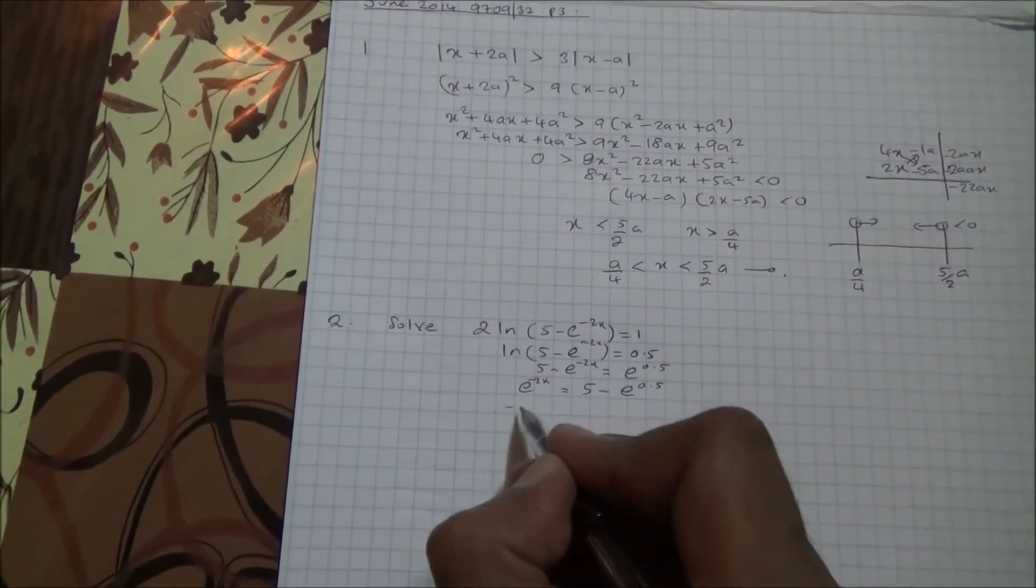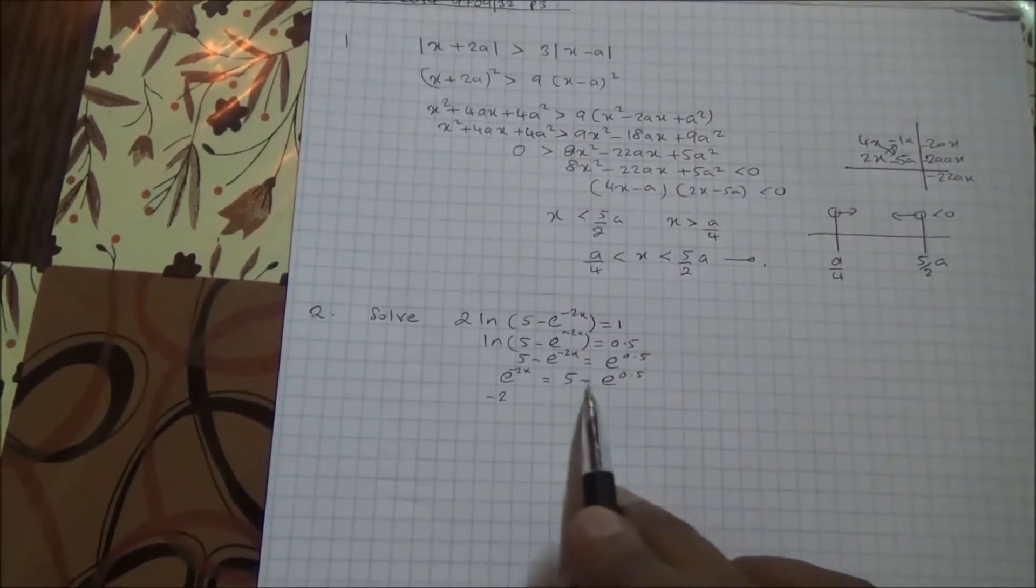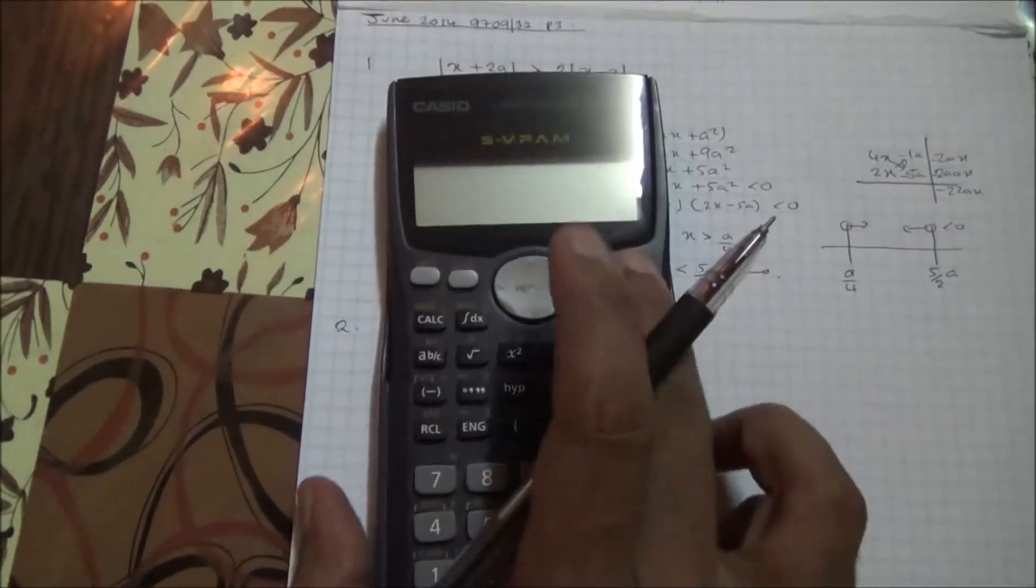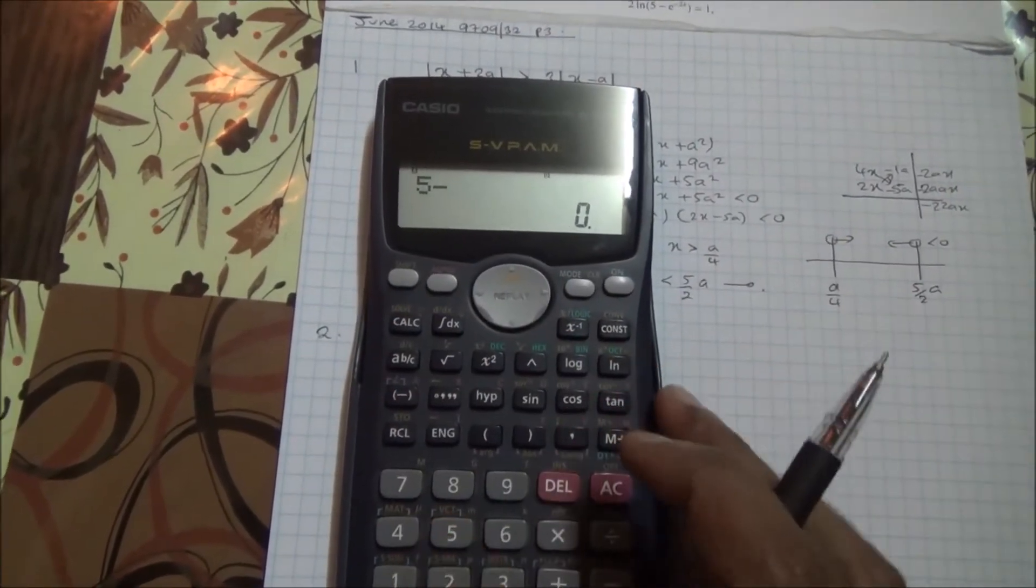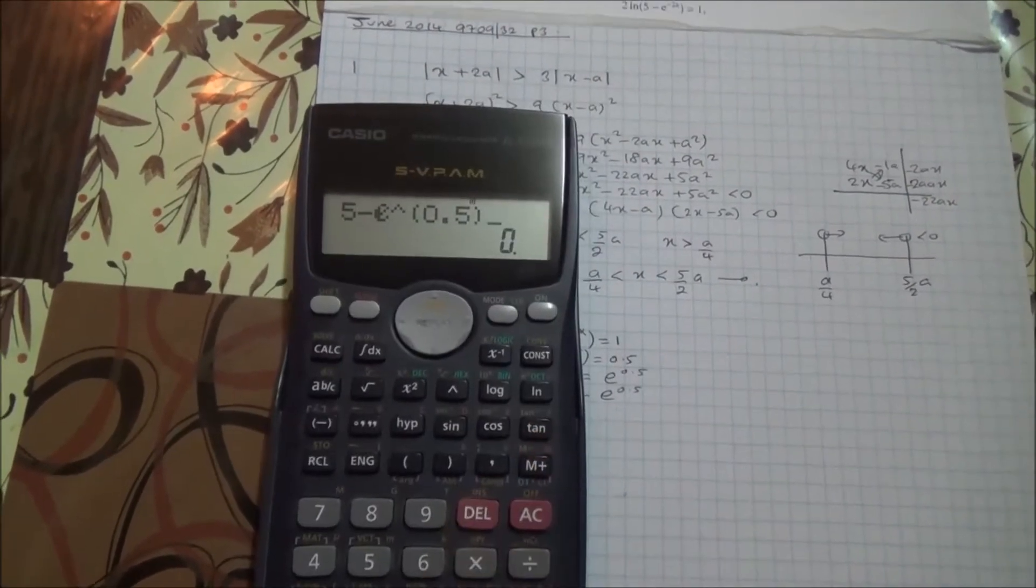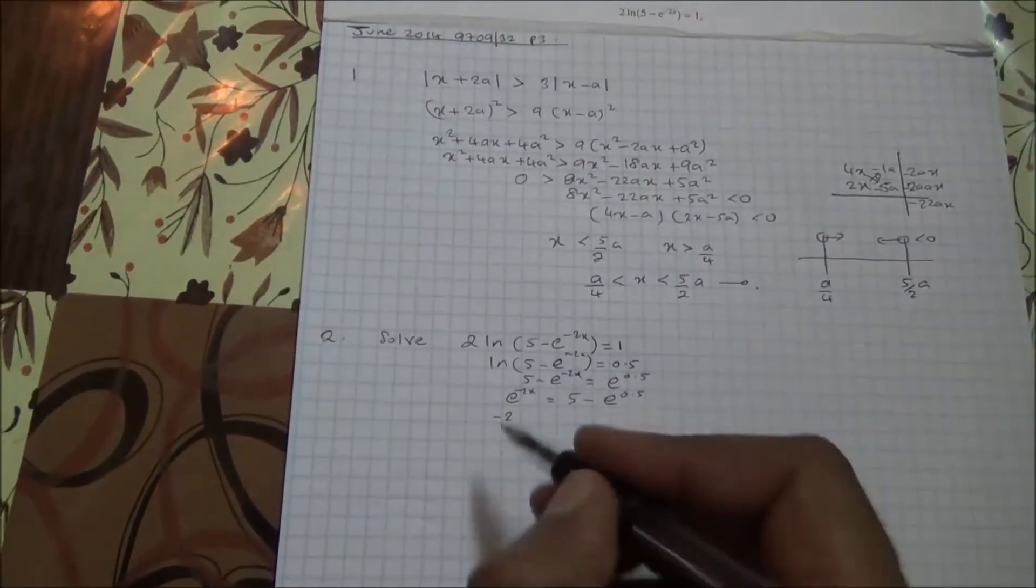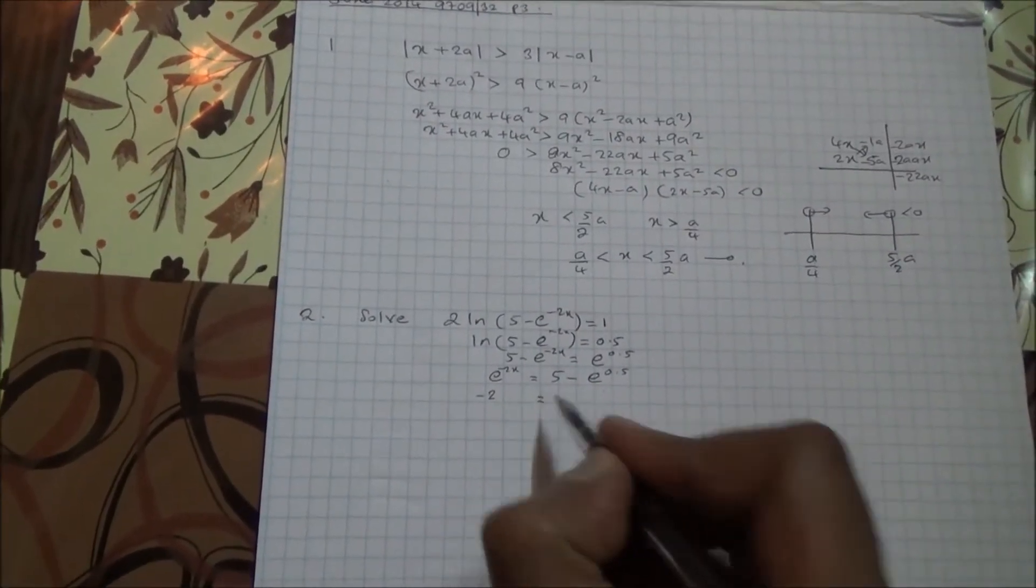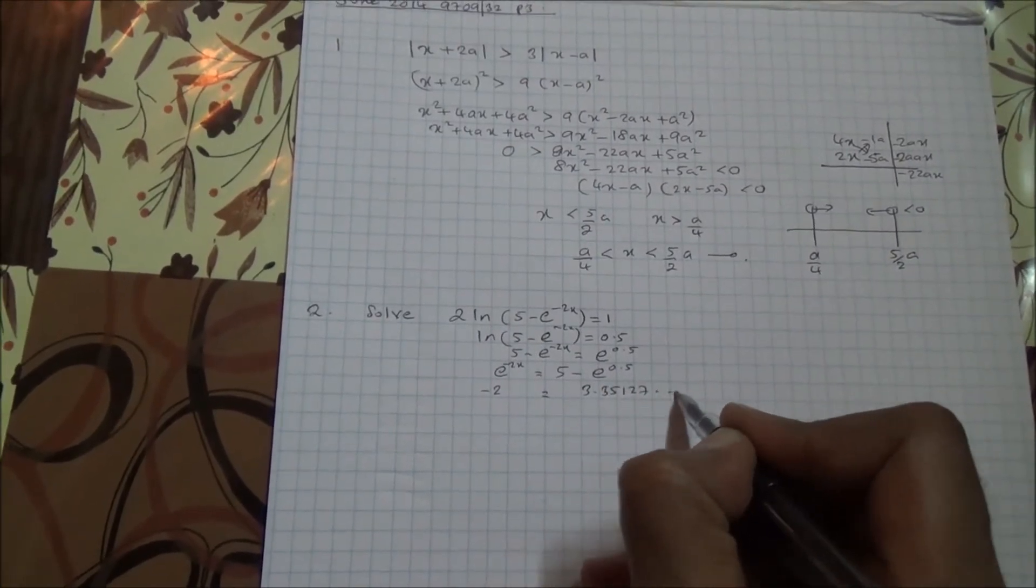And minus 2x comes down, I can say, but before we do that, we need to calculate this value here. So that's 5 minus, basically, e to the power of 0.5. Okay, and that's going to give us 3.35127, and so on.